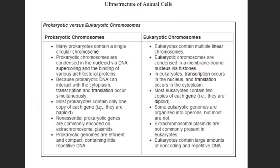Most prokaryotic cells contain only one copy of each gene — that is, a haploid genome. Most eukaryotic cells contain two copies of each gene — the DNA is diploid. For example, humans have 23 pairs of chromosomes (46 total), with alternate forms of genes called alleles. One copy may come from the maternal side and one from the paternal side in the diploid zygotic cell, while the prokaryotic genome is mostly haploid in nature.